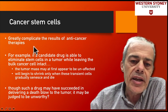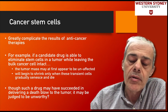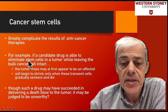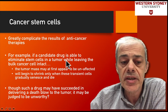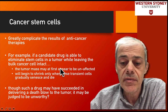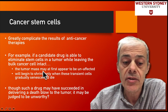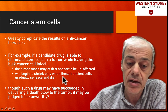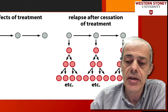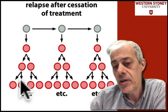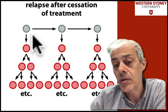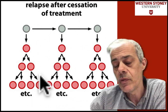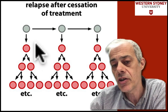So the cancer stem cells greatly complicate the analysis of results from cancer treatment. If the candidate drug eliminates the stem cells while leaving the tumor cells intact, it looks as if it was unaffected, but then the tumor will begin to shrink once the transiently amplified cells naturally senesce and die. If you target the stem cells, because you've got this big population of transiently amplified cells it looks as if it wasn't successful, but then these stop giving rise to new cells, and as these are removed from the body as part of normal biology, they're not replaced.